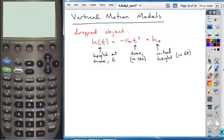And there's another type of vertical motion model that embellishes this. It includes it but it goes one step further, and that's a thrown or projected object.